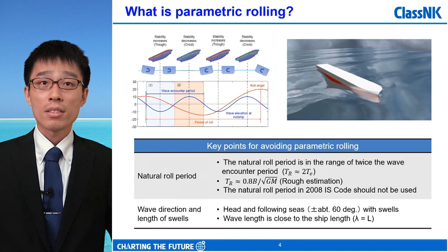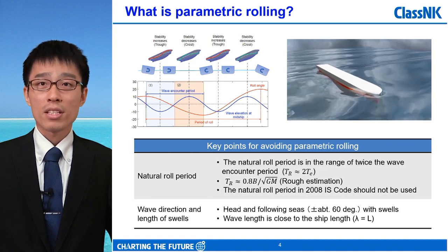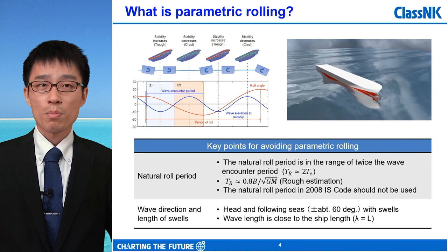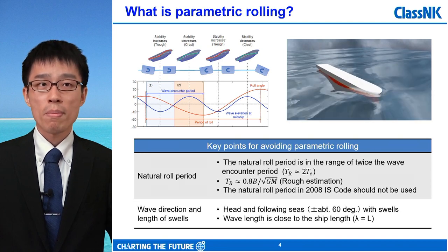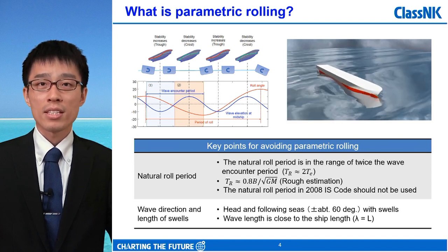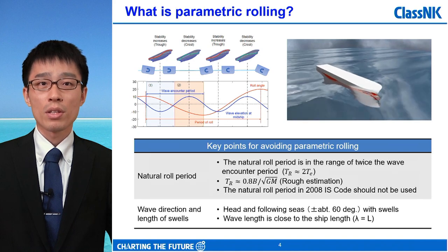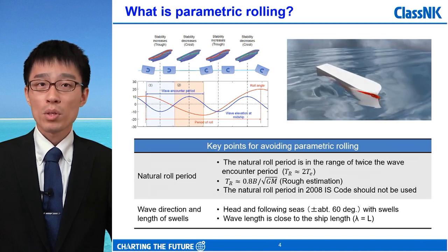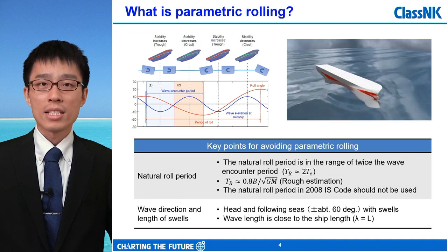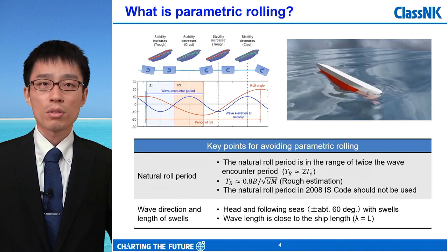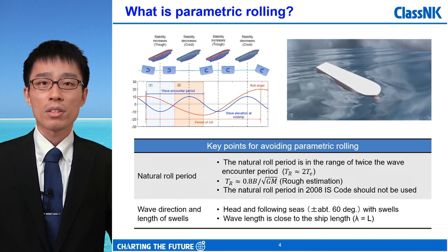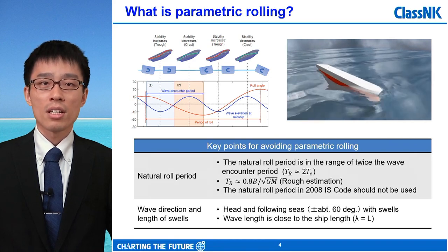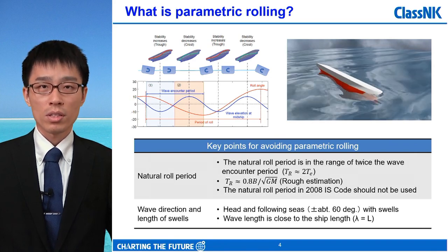This slide shows a basic mechanism explanation on what parametric rolling is. Simply put, parametric rolling is a resonance phenomenon caused by periodic changes in the stability of a ship in a head sea, a following sea, or a quartering sea.